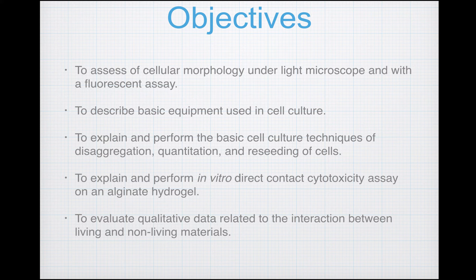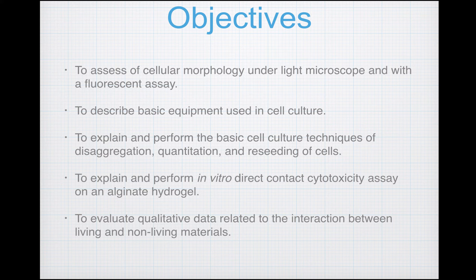The objectives of this laboratory are: to assess cellular morphology under a light microscope and with a fluorescent assay; to describe basic equipment used in cell culture; to explain and perform basic cell culture techniques of disaggregation, quantitation, and reseeding of cells; to explain and perform an in vitro direct contact cytotoxicity assay on an alginate hydrogel; and to evaluate qualitative data related to the interaction between living and non-living materials.